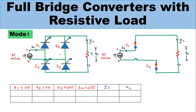In the circuit diagram of the full bridge converter with resistive load, four SCRs S1, S2, S3, S4 are connected — S1 and S2 are connected diagonally with each other, and S3 and S4 are connected diagonally with each other. The load voltage is represented by VL, load current through the load resistance by IL, input source current by IS, and input signal voltage by VI.